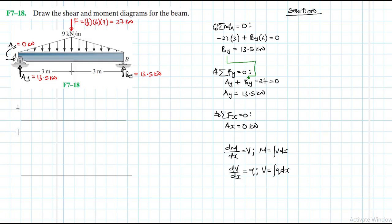Positive is up, negative is down. This is the shear force diagram and this is the bending moment diagram. Let's start with the shear at A — we have the boundary condition there. A_Y is equal to 13.5, therefore we are going to have a value of 13.5 up to the midpoint. So this is at 13.5 kilonewtons.